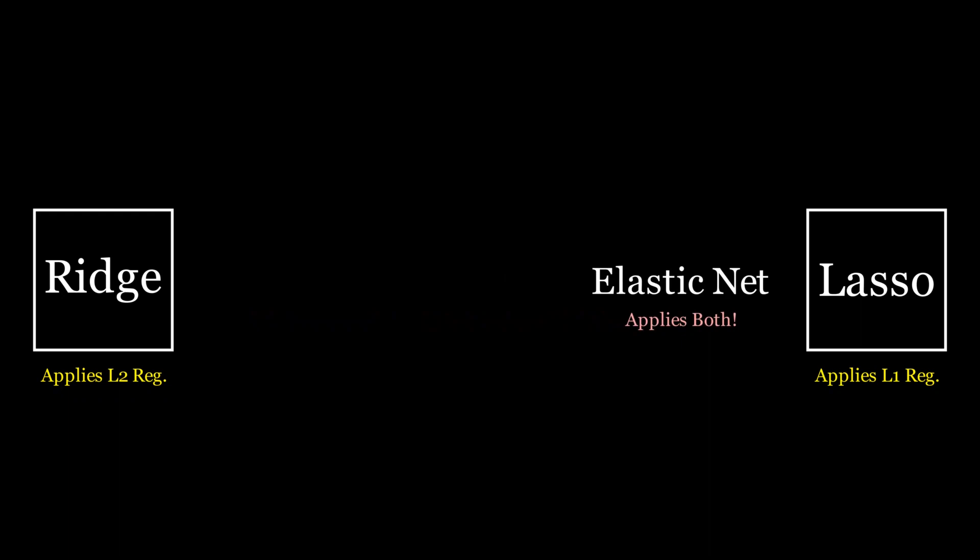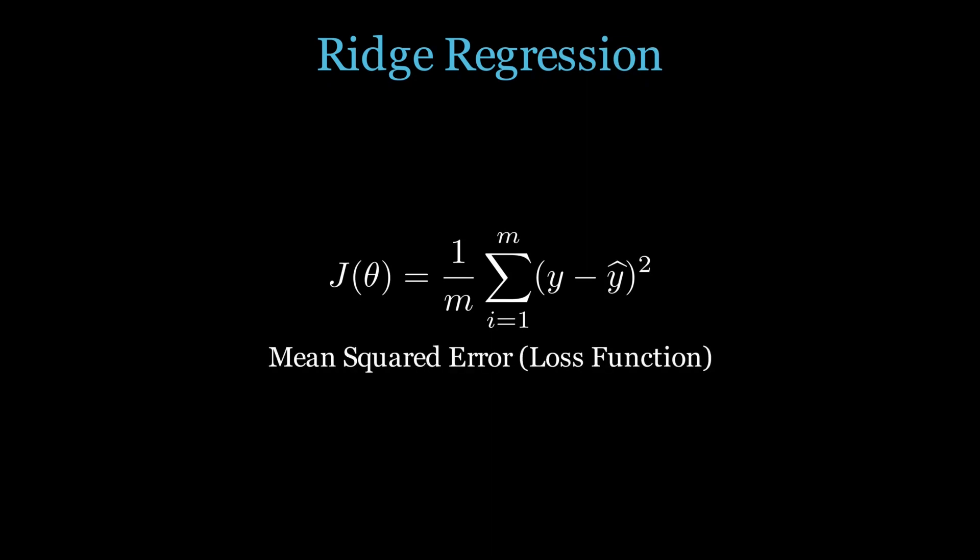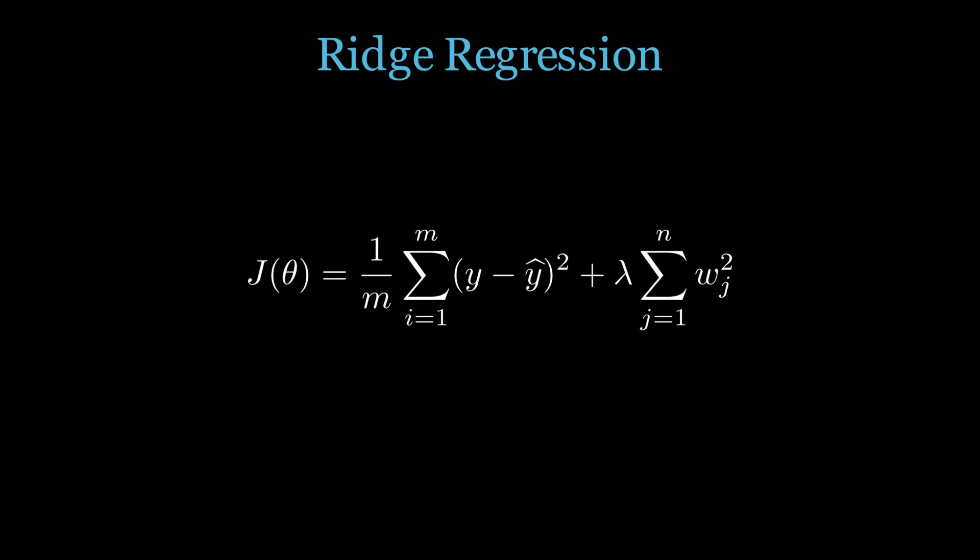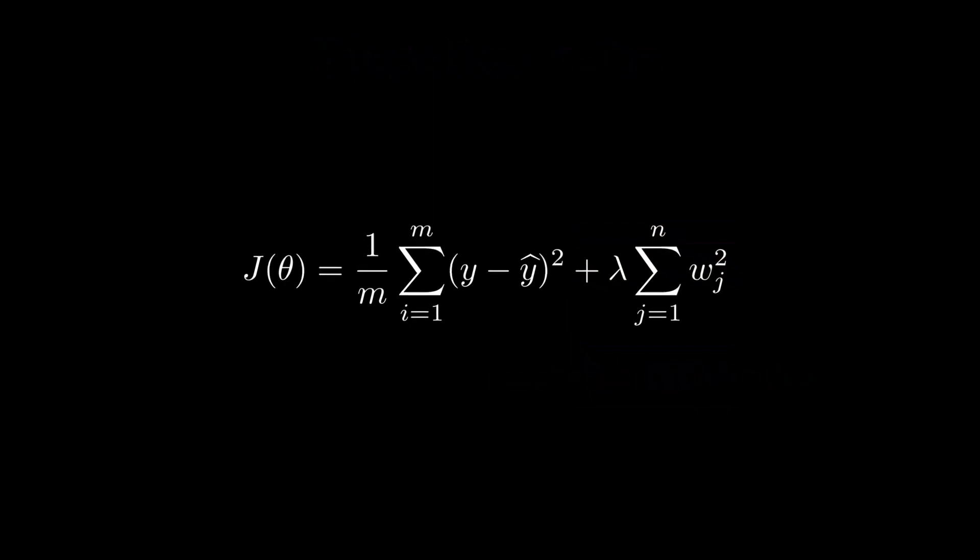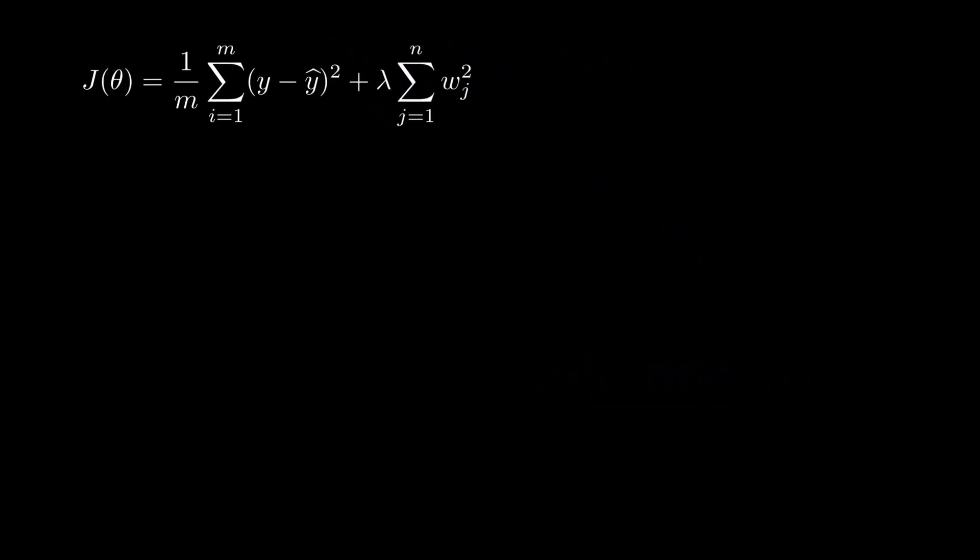Now we will cover ridge regression mathematics. As we discussed, linear regression uses mean squared error as its loss function, and ridge regression applies L2 regularization. I have just added those things and what we have got now is the cost function of ridge regression. Simple as that, nothing complex. Mean squared error plus the L2 regularization.